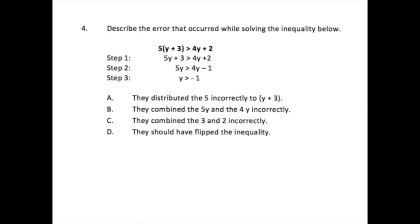Now here, for the next problem, describe the error. So we have basically the same thing. So we said the 5 was 5 times y, 5y. That was distributed correctly, but not here. So my first answer, they distributed the 5 incorrectly. That is exactly what happened. That's my answer.